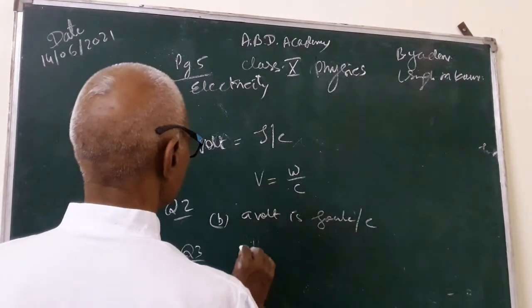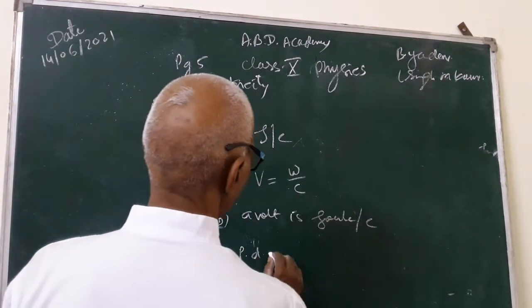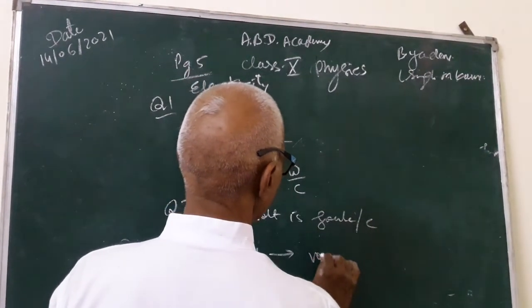V means potential difference and which is measured by volt meter.